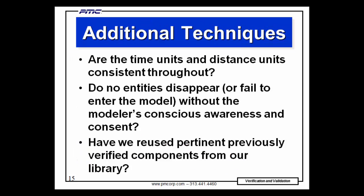A Mars probe was lost because English and metric units were intermixed — and that cost a few dollars. If entities arrive faster than the first queue can accommodate them, what happens? In most simulation software their arrival is canceled — they just never appear — and the software may or may not provide a warning. What would happen in the real system? A prospective customer might decide to try another restaurant, while in a factory context the incoming part might just pile up on the warehouse floor. Those would be very different behaviors.